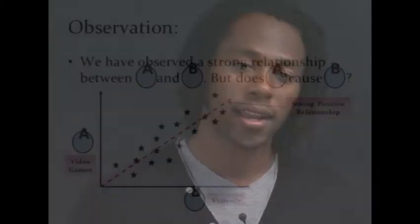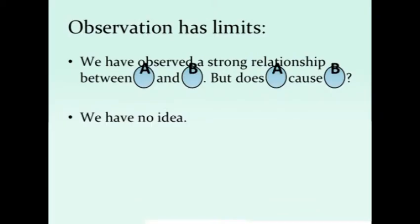Once you have multiple data points, you can then plot a relationship between A and B and see whether or not high levels of A are related to high levels of B. In this hypothetical scenario, we see a strong positive relationship between our A and our B variable, which means that the more people play violent video games, the more violent behavior they actually exhibit. So we have observed this strong relationship between A and B. But can we now say that A causes B? Do we have any idea about this causal relationship? And the answer is no — we still have no idea, despite having found that A and B are very much correlated.